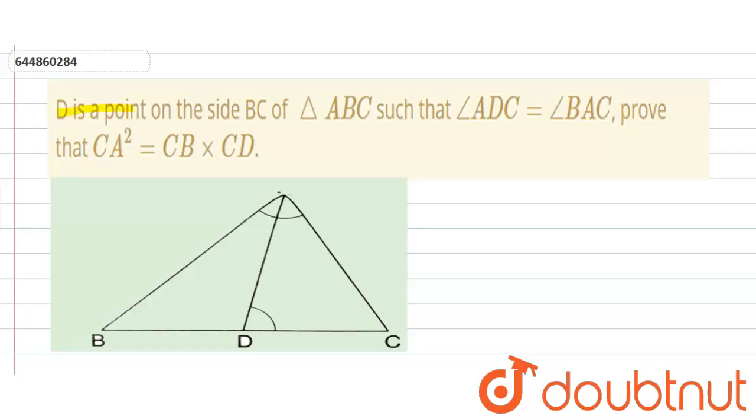The question is: D is a point on the side BC of triangle ABC such that angle ADC is equal to angle BAC. Prove that CA² = CB × CD. Now, in triangle ADC and triangle BAC...